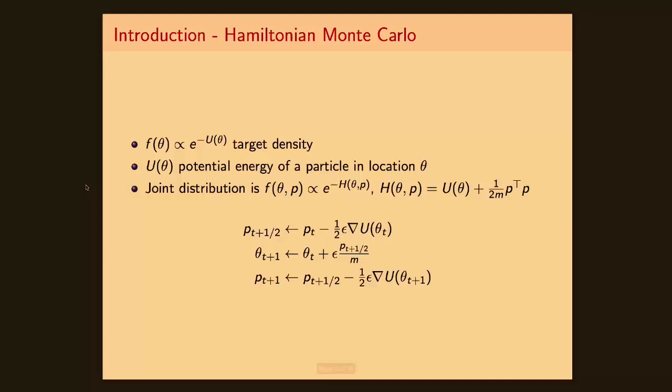So stepping back for a minute, let's consider the standard Hamiltonian Monte Carlo setting, where you're trying to sample from a posterior distribution f(θ), which can be written as directly proportional to the exponential of minus U(θ). So you can interpret your parameter as a particle moving in a physical system according to the Hamiltonian equations, where the Hamiltonian is given by the sum of a potential energy and a kinetic energy.